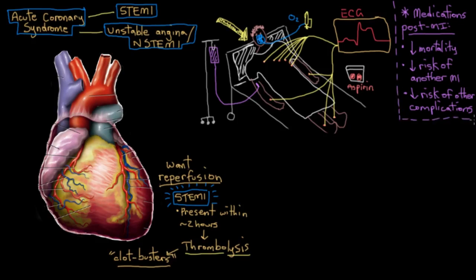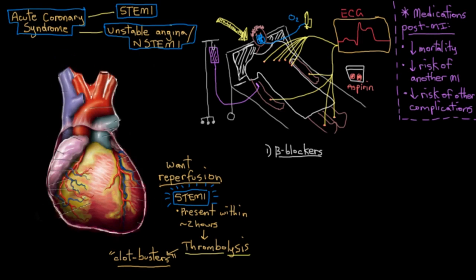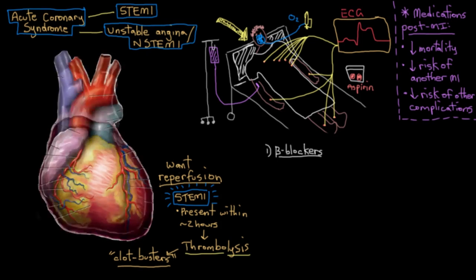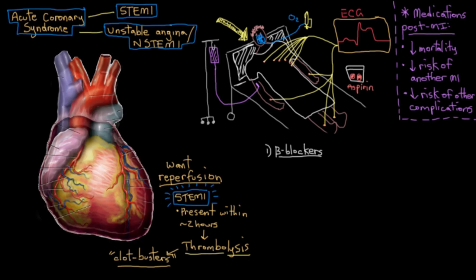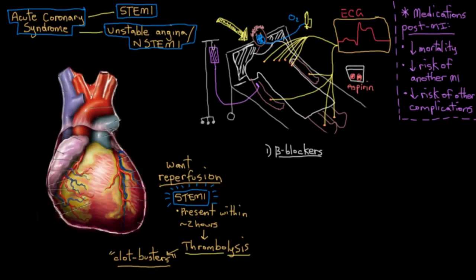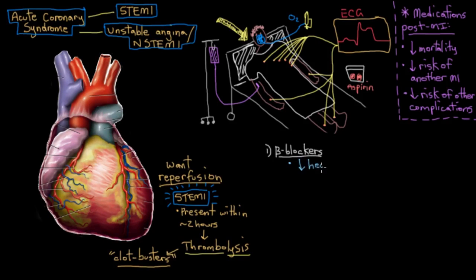So what are these drugs? Well, there's drugs that try to restore that oxygen supply and demand balance. So drugs like beta blockers. Beta blockers work by making the heart beat slower, so fewer beats per minute, and it also makes the heart beat with reduced force. So overall, this reduces the heart's oxygen demand, because if the muscle's not working as hard, it needs less oxygen.